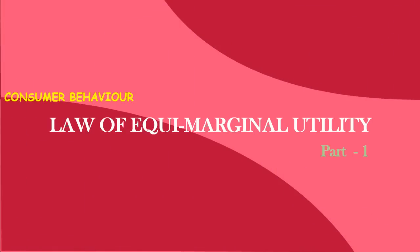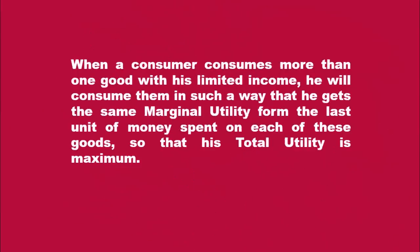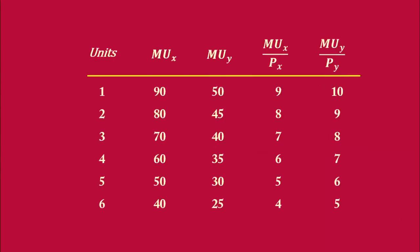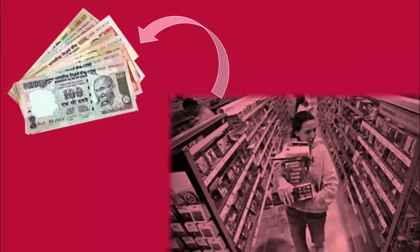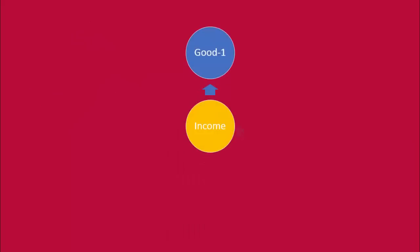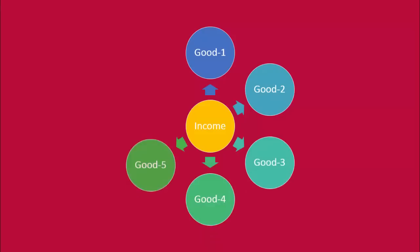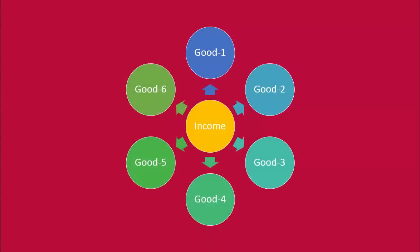In this tutorial, we shall limit ourselves with the law and constructing an illustrative table. In the real world, a consumer consumes a number of goods with his limited income. The Law of Equi-Marginal Utility tells us how he allocates his limited income among these goods.